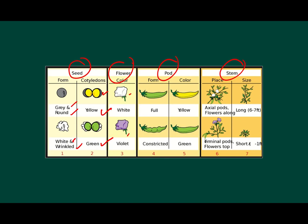For the pod, the form of the pod, full and constricted, and the color of the pod, yellow and green. For the stem, the place of flowers in stem, axial or terminal. And for the size, some were long and some were short. These are the list of characteristics that were discovered by Mendel.